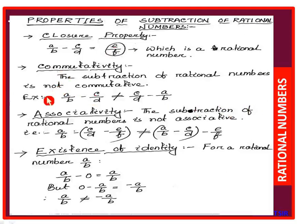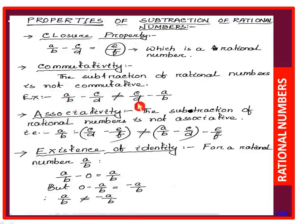The subtraction of rational numbers is not commutative. If A/B and C/D are two rational numbers, then A/B minus C/D is not equal to C/D minus A/B. In case of addition it was equal, but in case of subtraction it is not equal.